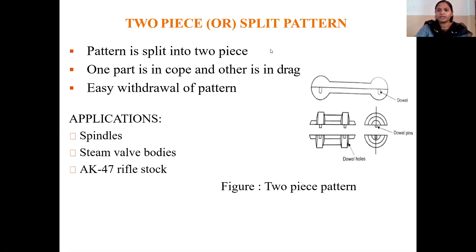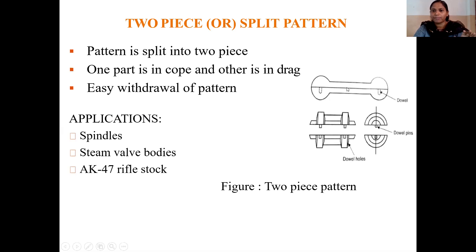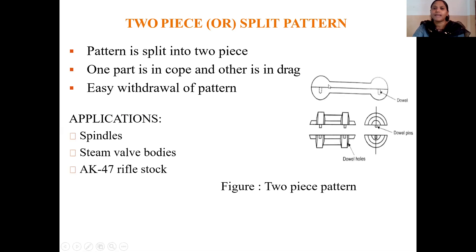Here you can see the split pattern. The upper part of the pattern is kept in the cope and the lower part is kept in the drag. During molding the pattern is attached in the mold. After casting, you take out the pattern from the mold, and the cope mold and drag mold are assembled together, and you get the castings.